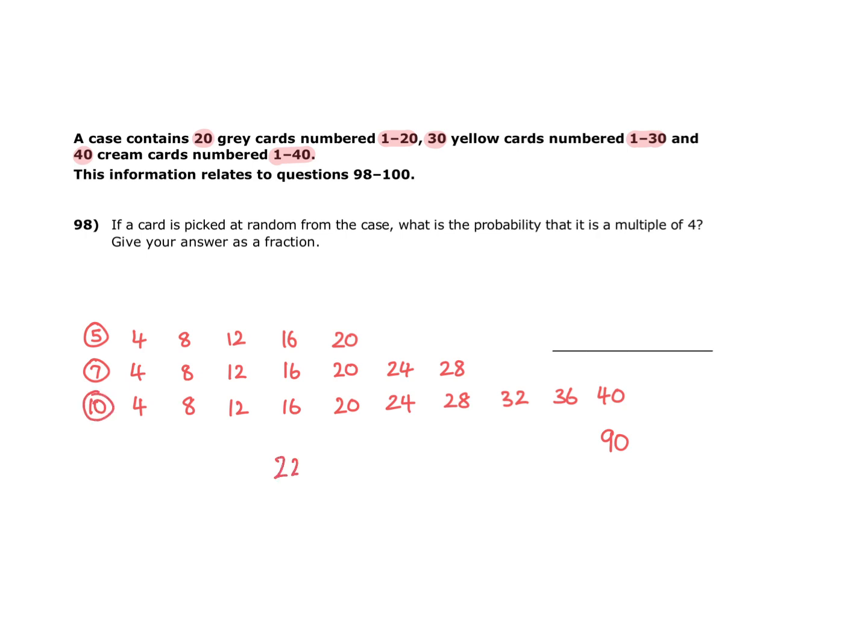This is 22 cards altogether out of the 90 cards in the case, and we can cancel that fraction down to show it in a lower form by dividing both numbers by 2. 22 divided by 2 is 11, and 90 divided by 2 is 45. The fraction can't be cancelled down any further, so we can say the probability of selecting a multiple of 4 from the case of cards is 11 out of 45.